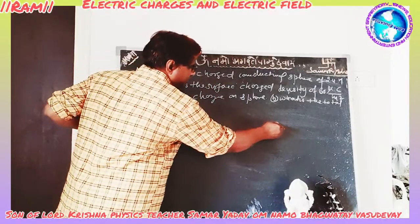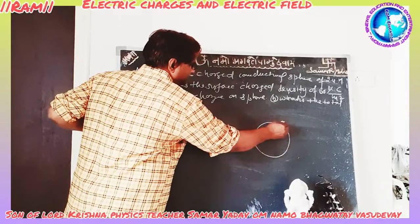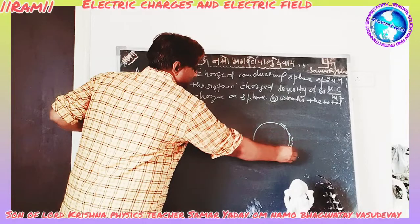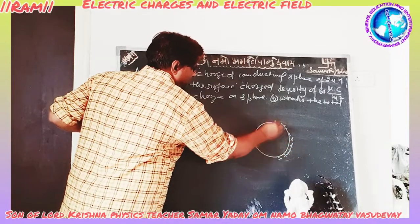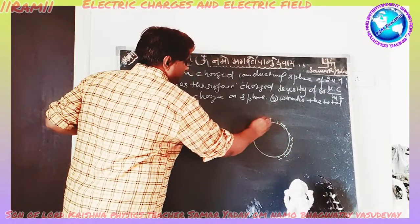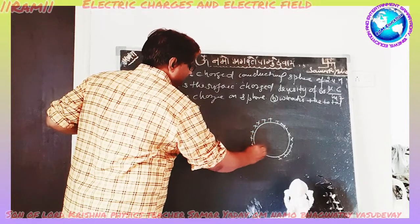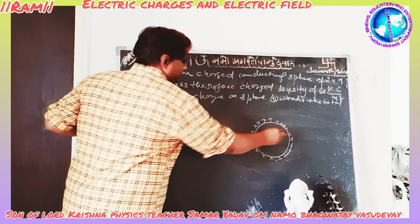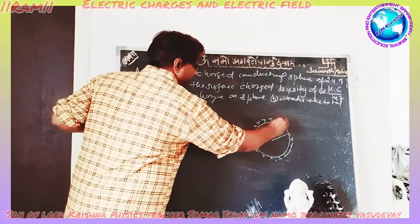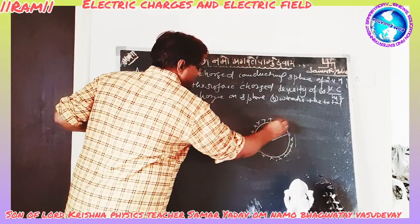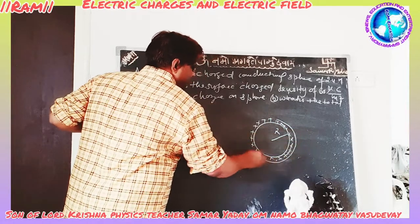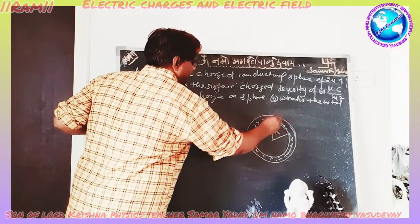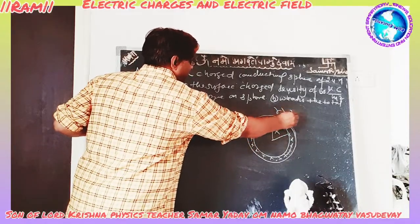Suppose this is the charged sphere. We construct a Gaussian sphere of radius small r, where r is greater than capital R.